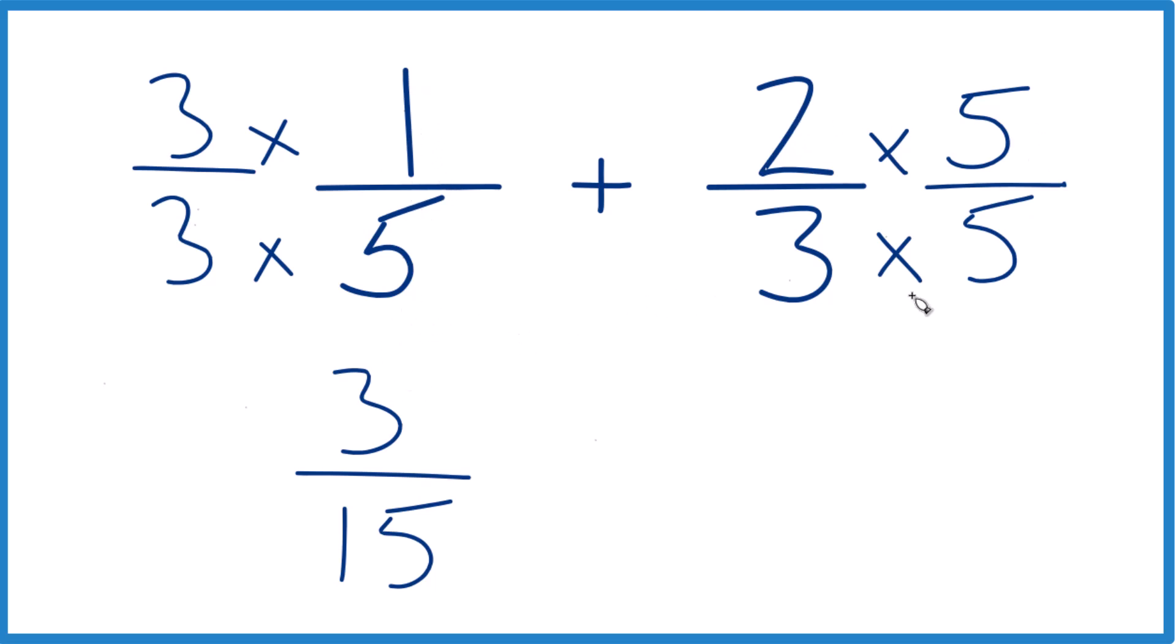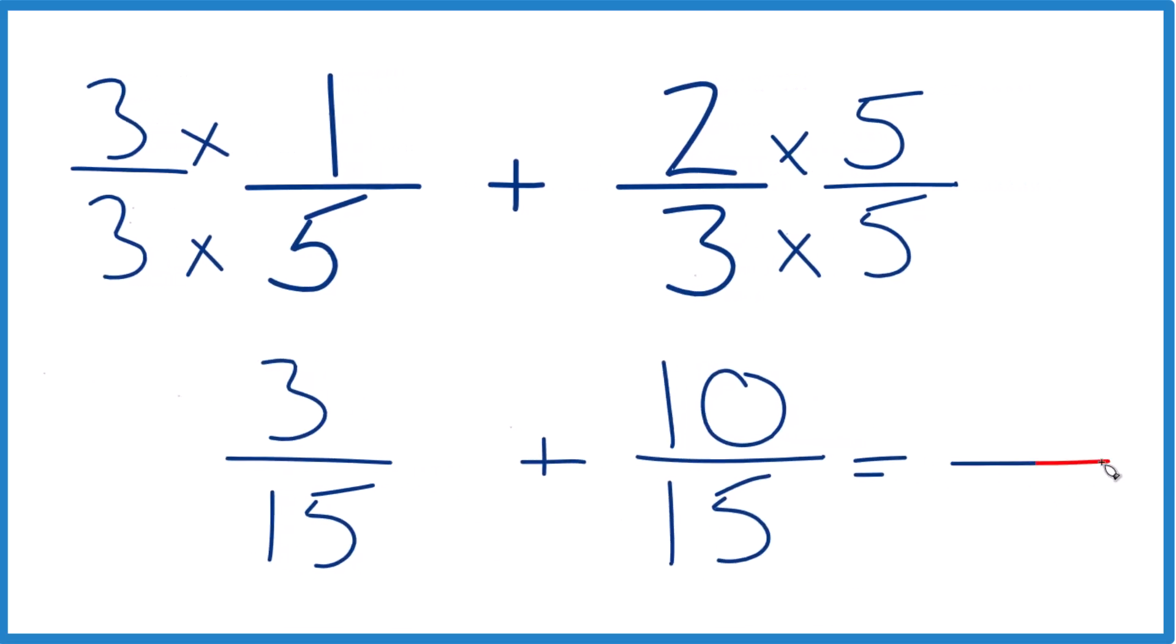Here, we'll add two plus five is 10, and three times five is 15. Now we have the same denominator, we're just going to bring that across. When we add fractions, we keep that the same, and then we add the numerators.